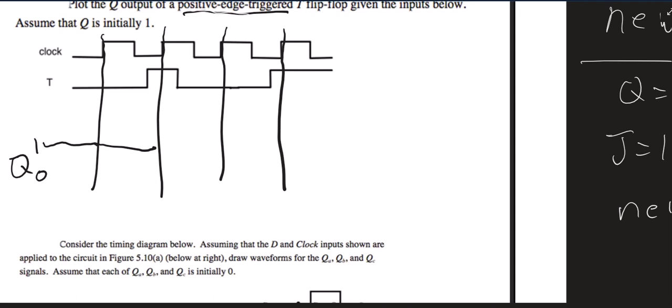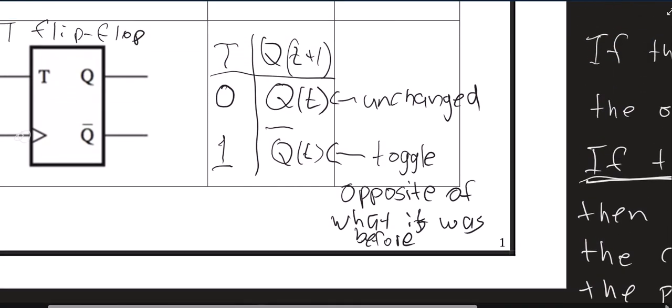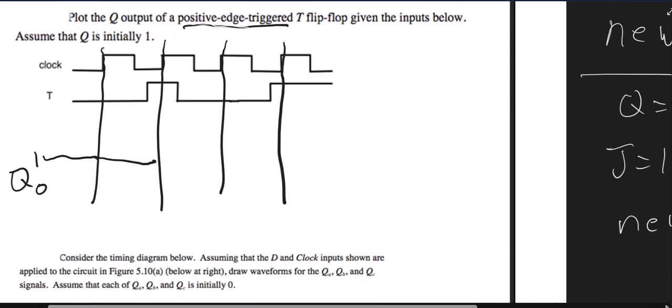Now when I get to the positive edge of the clock, I see that T is 1. Well, when T is 1, I'm supposed to toggle, so I'm supposed to become the opposite of what I was before. So before I was 1, so now I'm supposed to be 0.